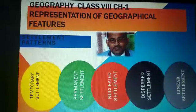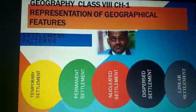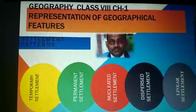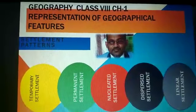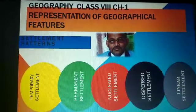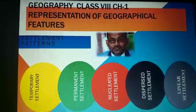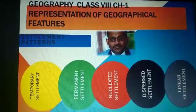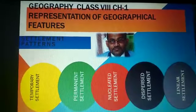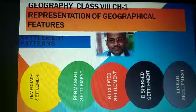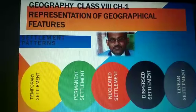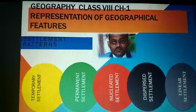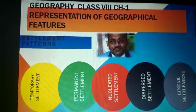The second one, shown in green, is the permanent settlement. The third one, shown in red, is the nucleated settlement. The fourth one, shown in black, is the dispersed settlement.